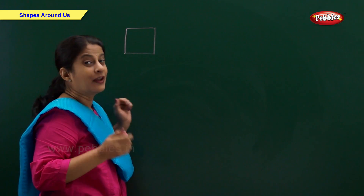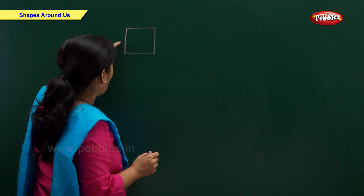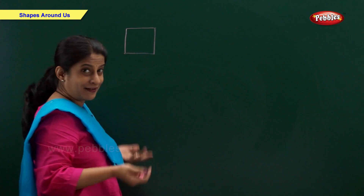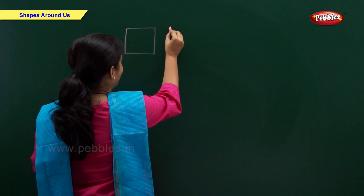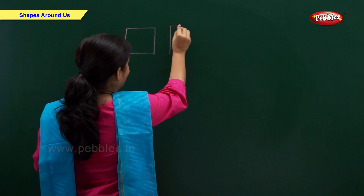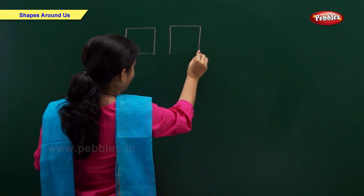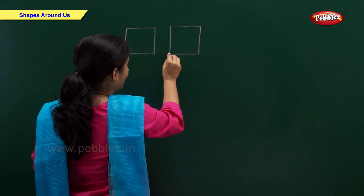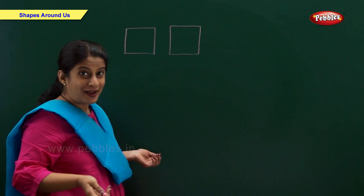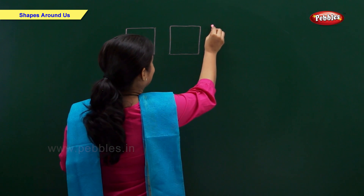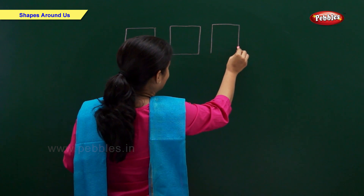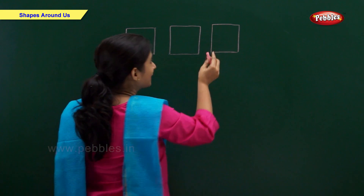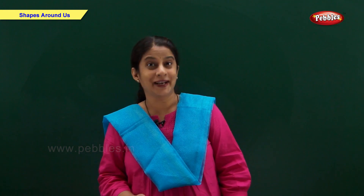Square. You know friends, all the four sides of the square are equal. Square, square.